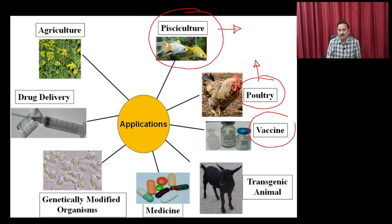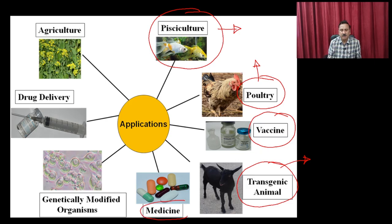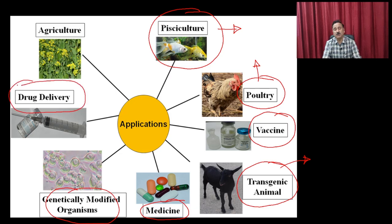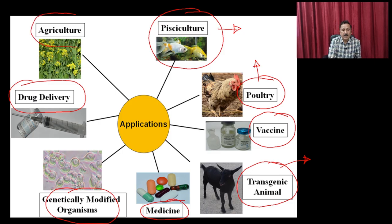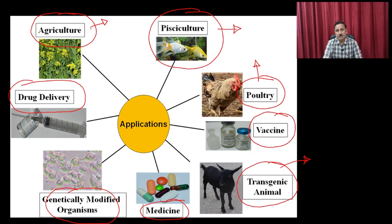Biotechnology is also developing different types of vaccines, developing transgenic animals which we are going to discuss at the end of this unit, different types of medicines, genetically modified organisms, and drug delivery principles — including nano-biotechnology principles. In agriculture, you have BT cotton and products like golden rice, which is a rice having a very high quantity of different types of vitamins.